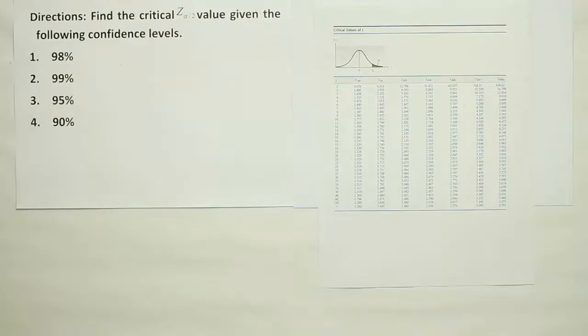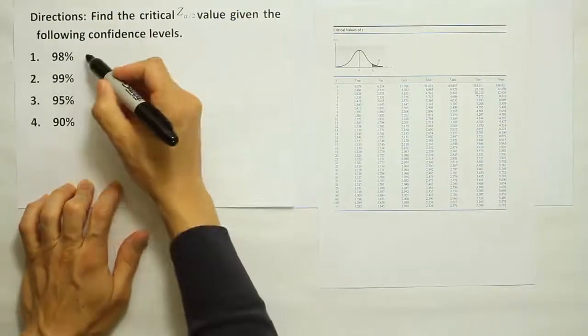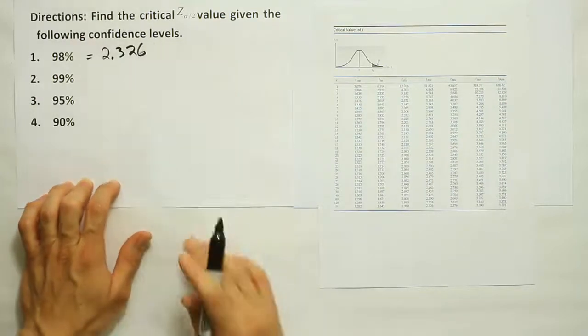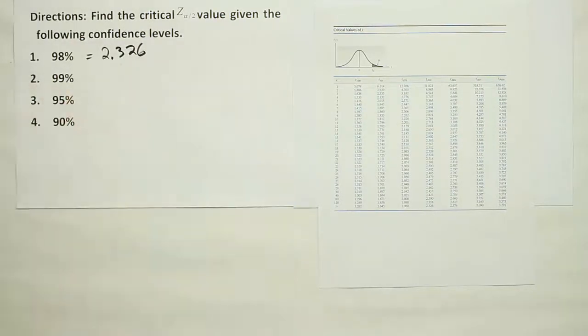Okay, so the answer we find for the first one was 2.326. Let's go back now and look up the critical Z-value for 99% confidence.